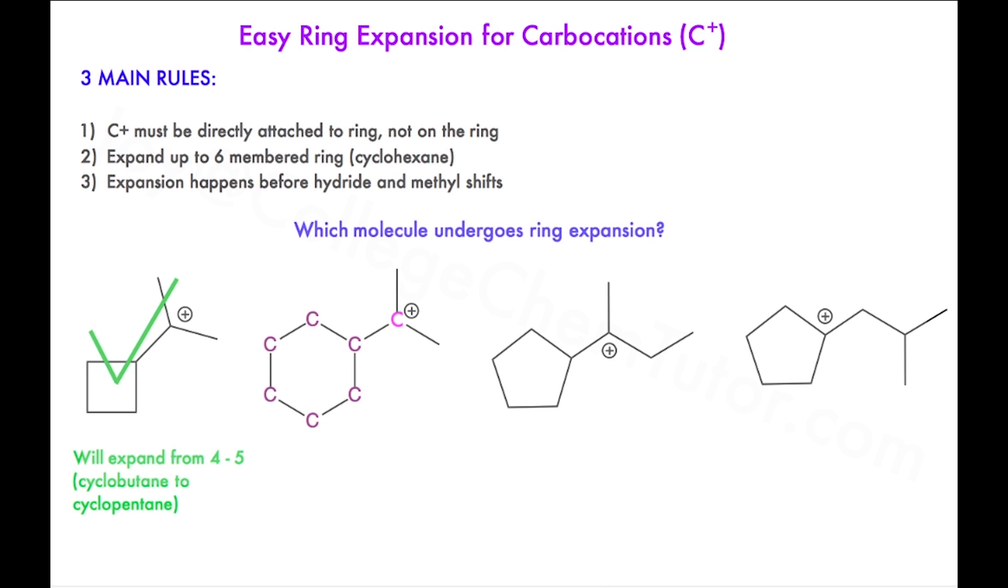For the next molecule, again, the carbocation atom is highlighted in pink and is also directly attached to the ring, which is represented by the maroon carbons. However, since the molecule is already a six-membered ring, it will not expand to seven.